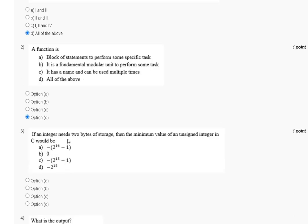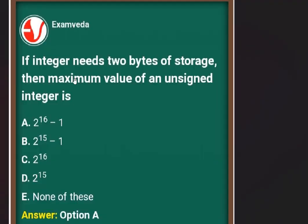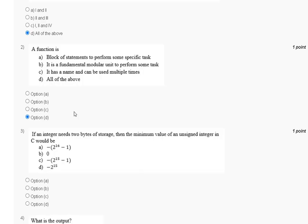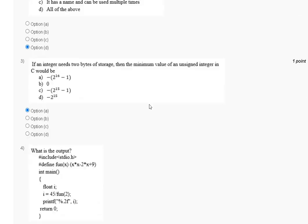Question 3: if an integer needs two bytes of storage, then what is the minimum value of an unsigned integer in C? The explanation is that if an integer needs two bytes of storage, the maximum value of an unsigned integer is 2 to the power of 16 minus 1. The correct answer for question 3 is option A.